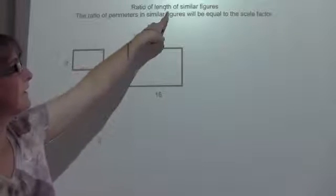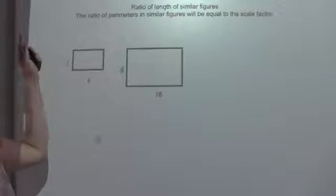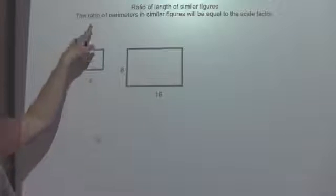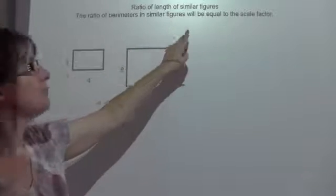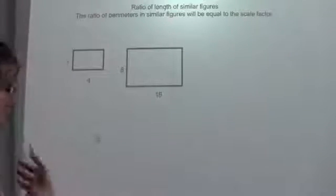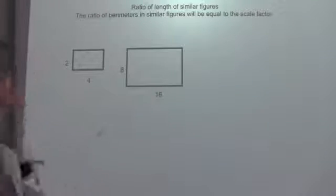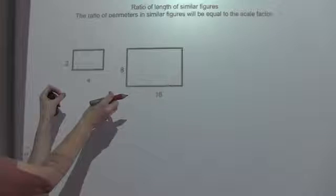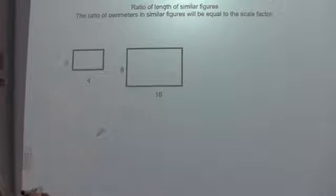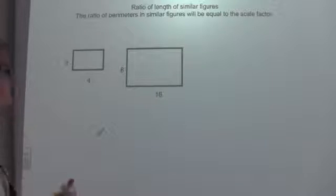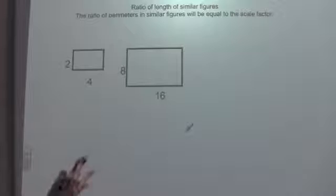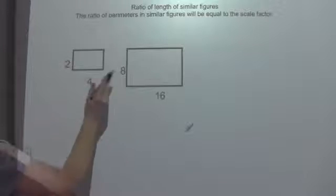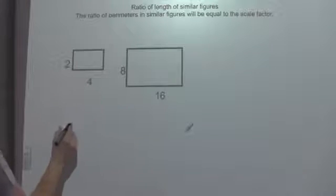Here we're discussing the ratio of length of similar figures. The ratio of perimeters in similar figures will be equal to the scale factor. These are similar because they are the same shape but not necessarily the same size, but their sides are proportional. How do I go about finding my scale factor? Using corresponding sides, I just want to set up a ratio.